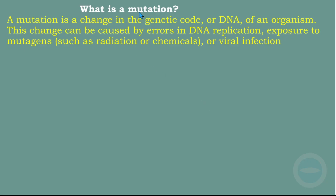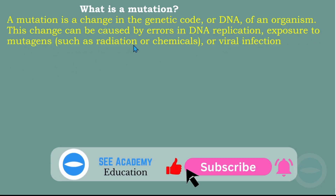What is a mutation? A mutation is a change in the genetic code or DNA of an organism. So if there is a change in a genetic code or the sequence of a nucleotide in a DNA, this process is called mutation. This change can be caused by an error in DNA replication, or by exposure to mutagens such as radiation, chemicals, or viral infection.